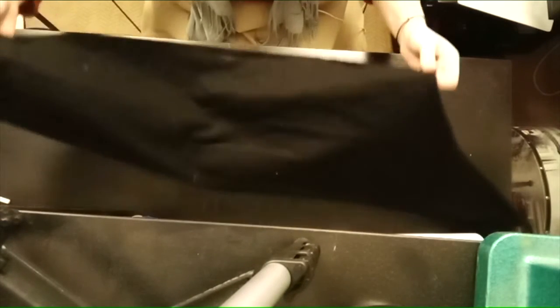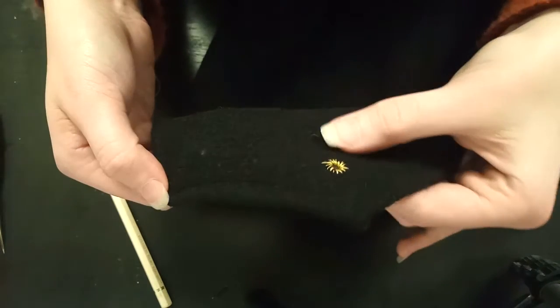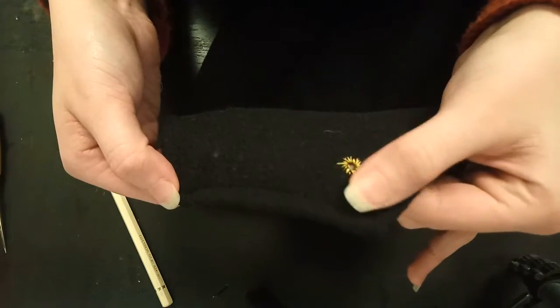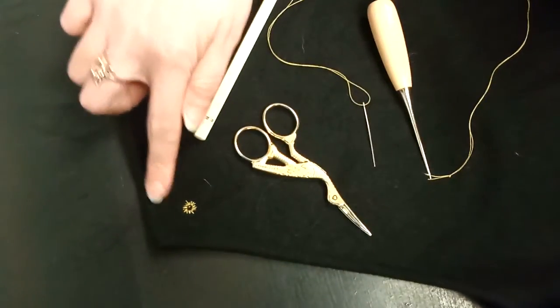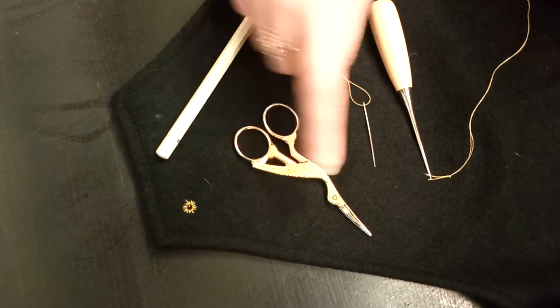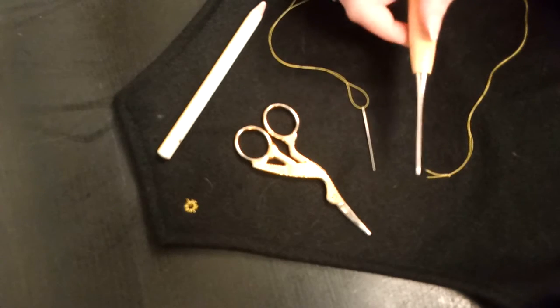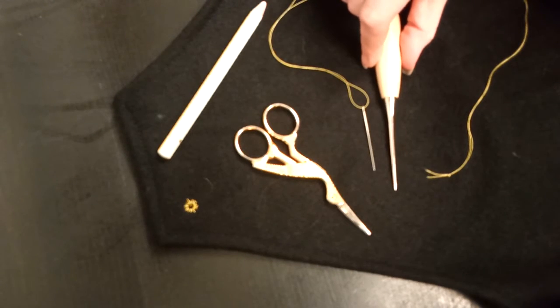And now we are going to make some eyelets. So here's one that I've just done. So the equipment that we'll need is something to draw with, some scissors, needle and thread, and an awl, something pointy.